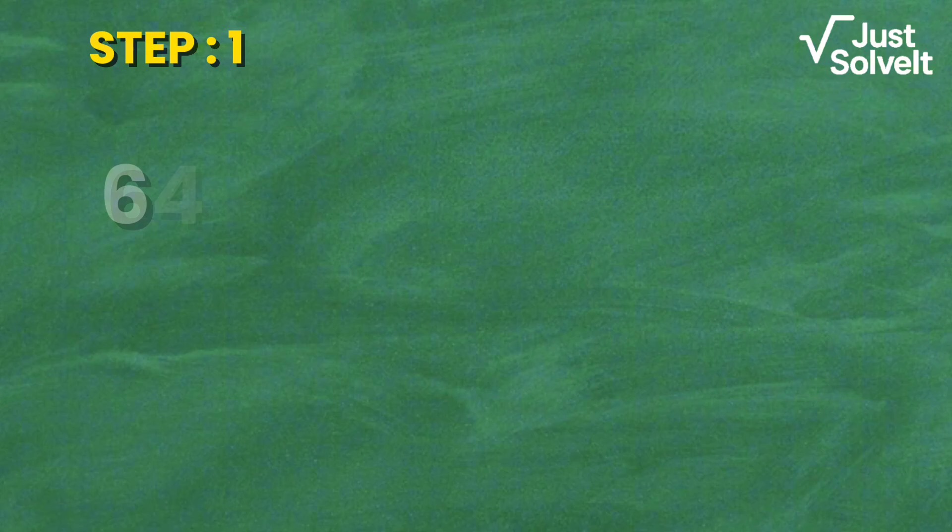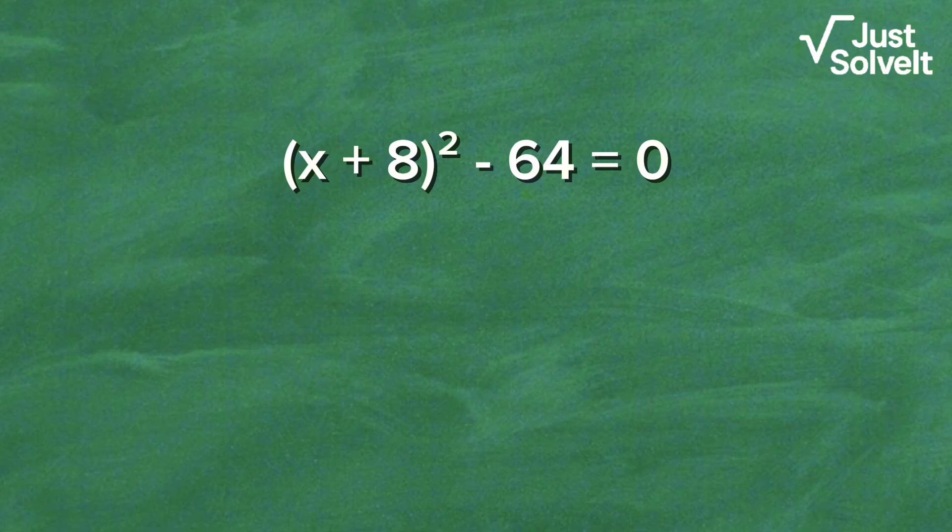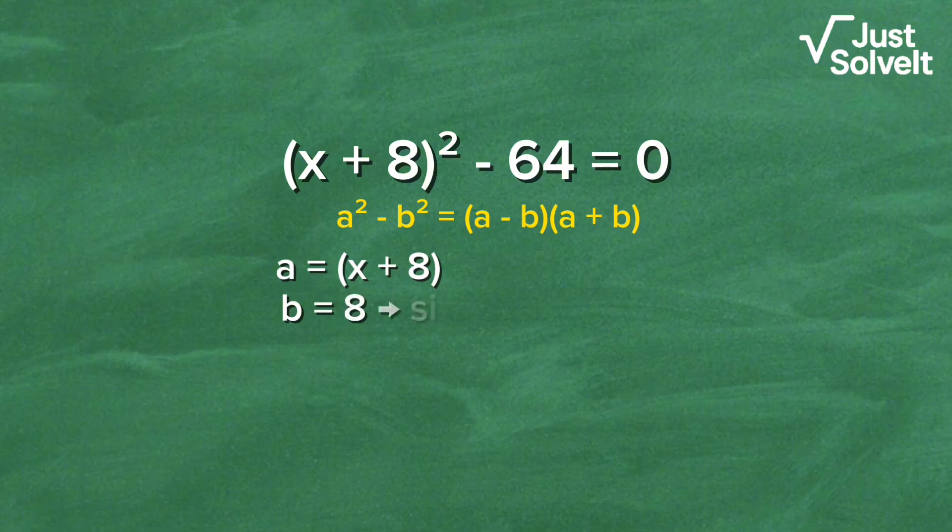Step 1: Bring 64 to the left side. (x + 8) squared minus 64 equals 0. Now notice, this is in the form a squared minus b squared, where a equals x + 8, and b equals 8. Since 64 equals 8 squared, so apply the identity.